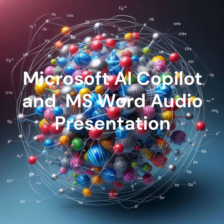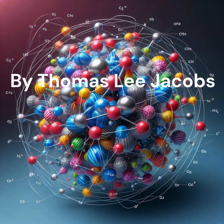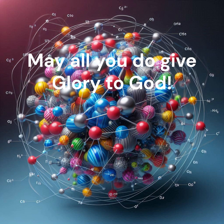Covalence refers to the number of electron pairs that an atom can share with other atoms. This term is often used in chemistry to describe the nature of chemical bonds formed by the sharing of electrons between atoms.